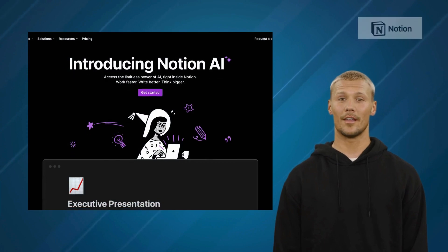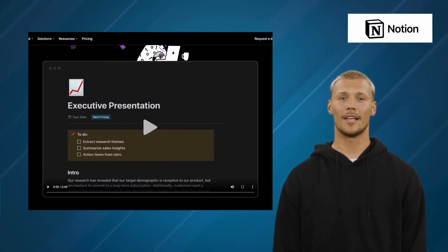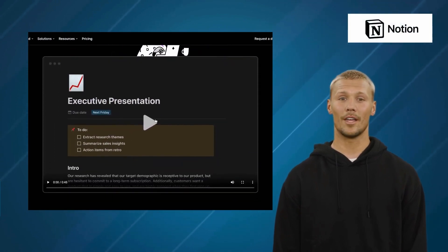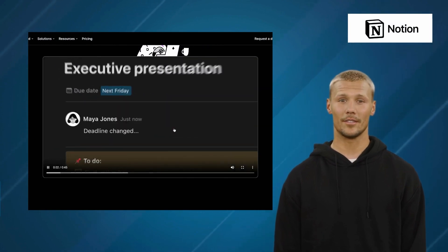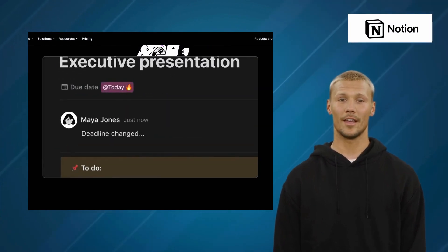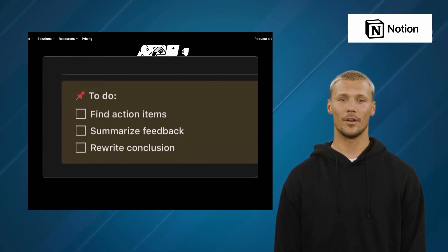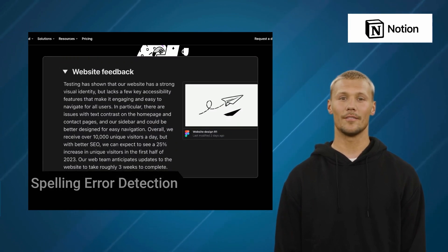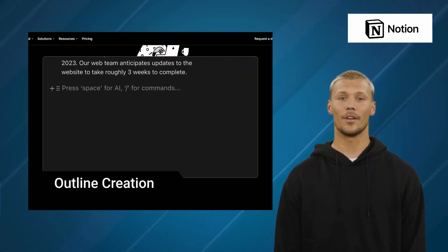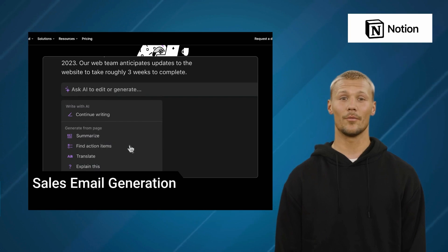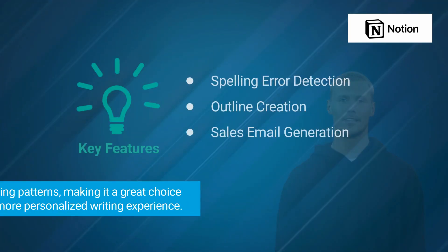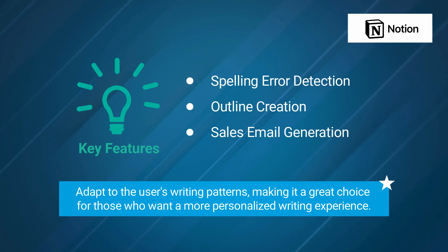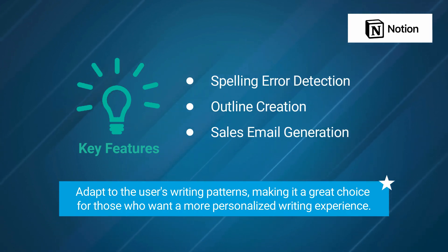The fifth alternative is Notion AI. Notion AI is an AI-powered writing tool that uses natural language processing to suggest phrases and sentences that fit into the user's writing style. The software offers features like spelling error detection, outline creation, and sales email generation. Its standout feature is its ability to learn and adapt to the user's writing patterns, making it a great choice for those who want a more personalized writing experience.